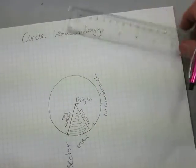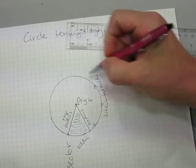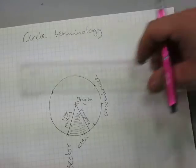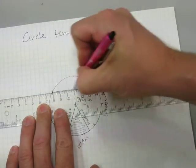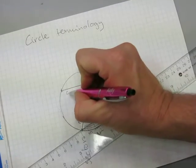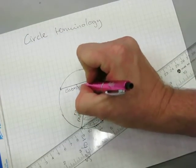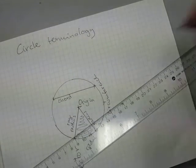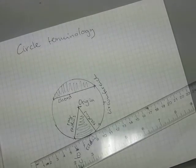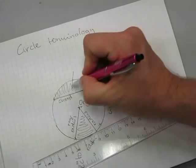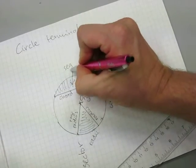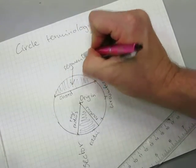Now I can connect two points on the circumference of the circle without going through the origin of the circle, like so. If I do that, I just drew a chord. This is a chord in a circle. This area here enclosed between the chord and the circumference is the segment — a segment in a circle.